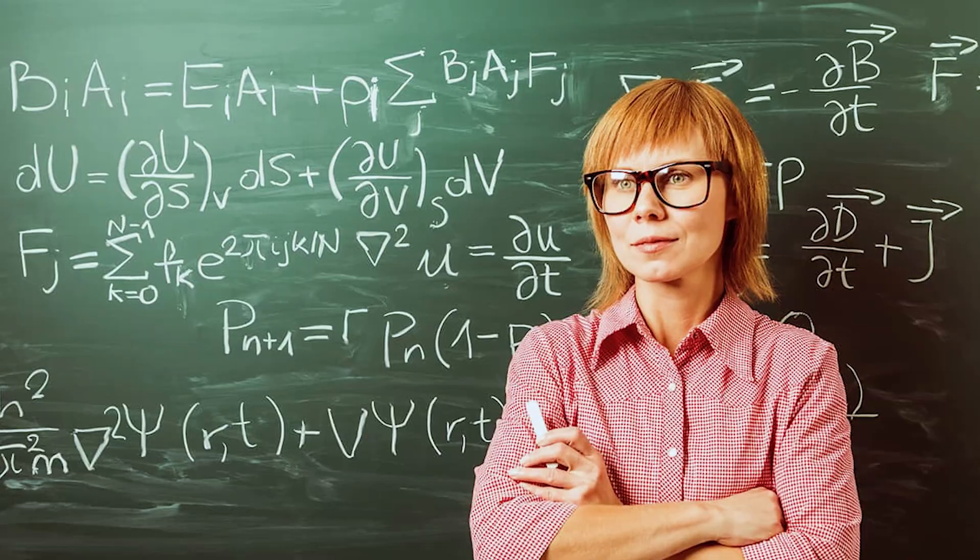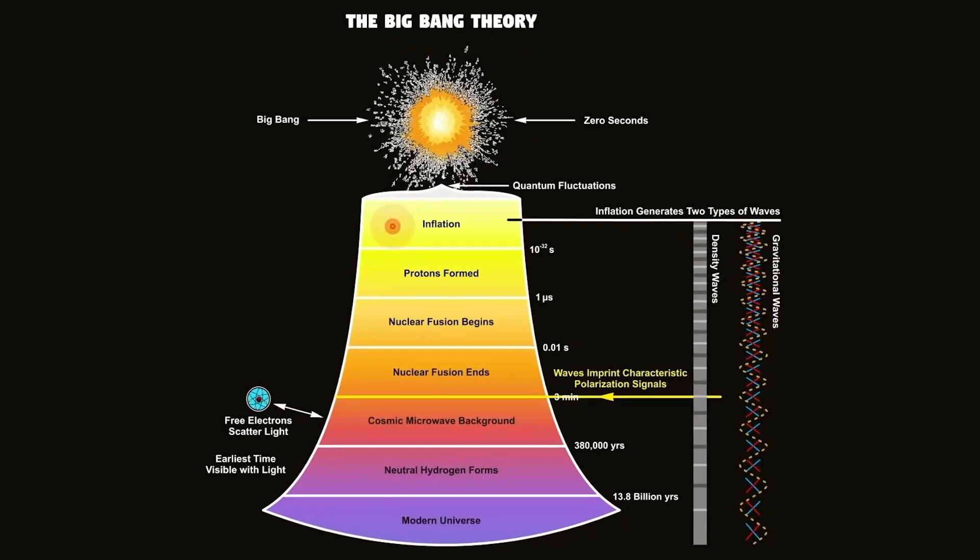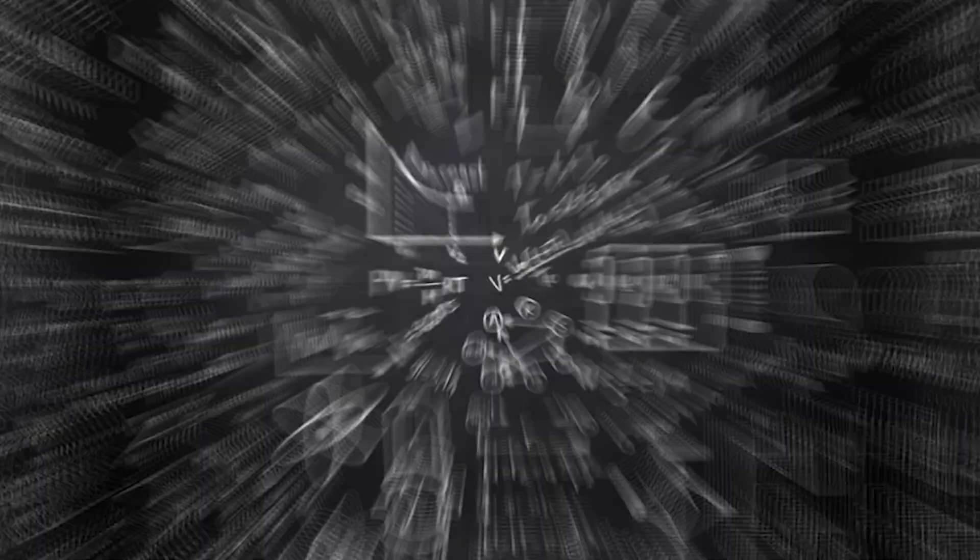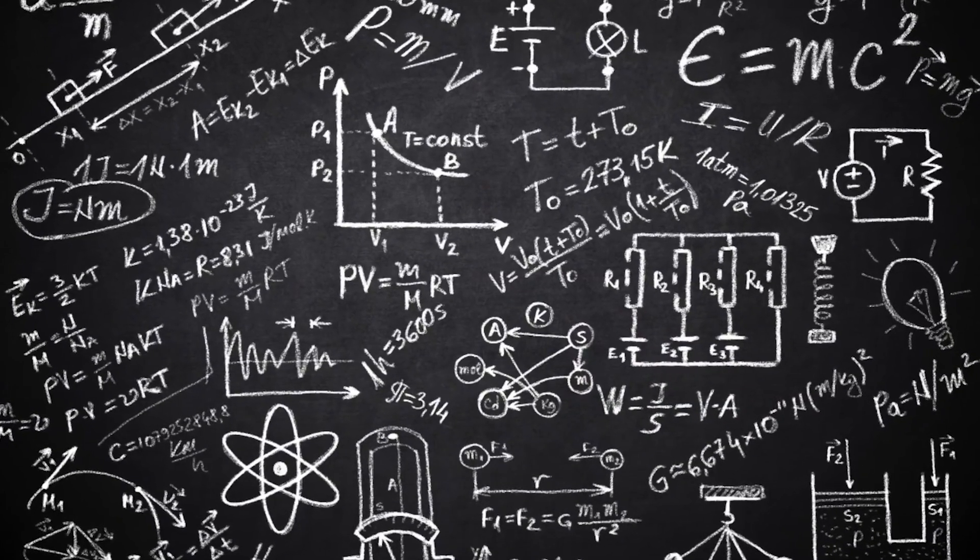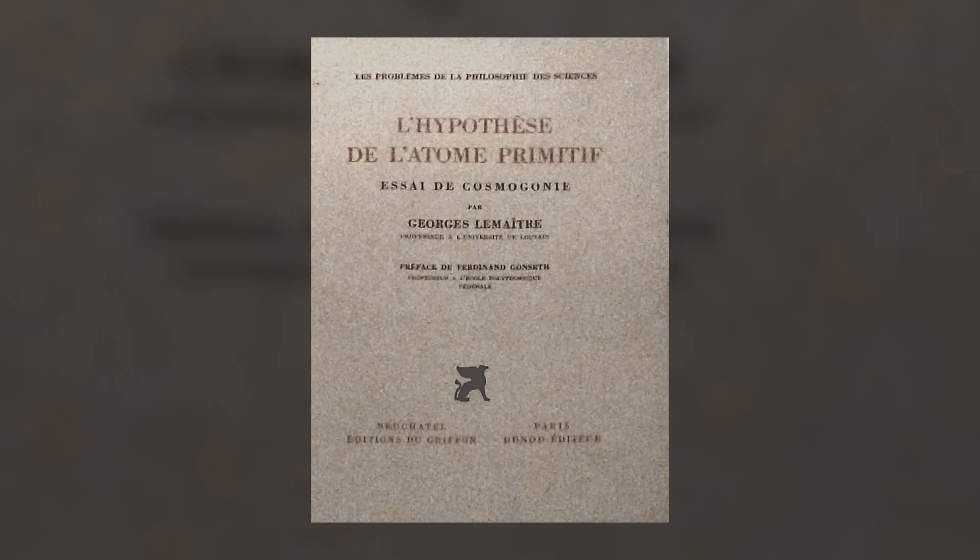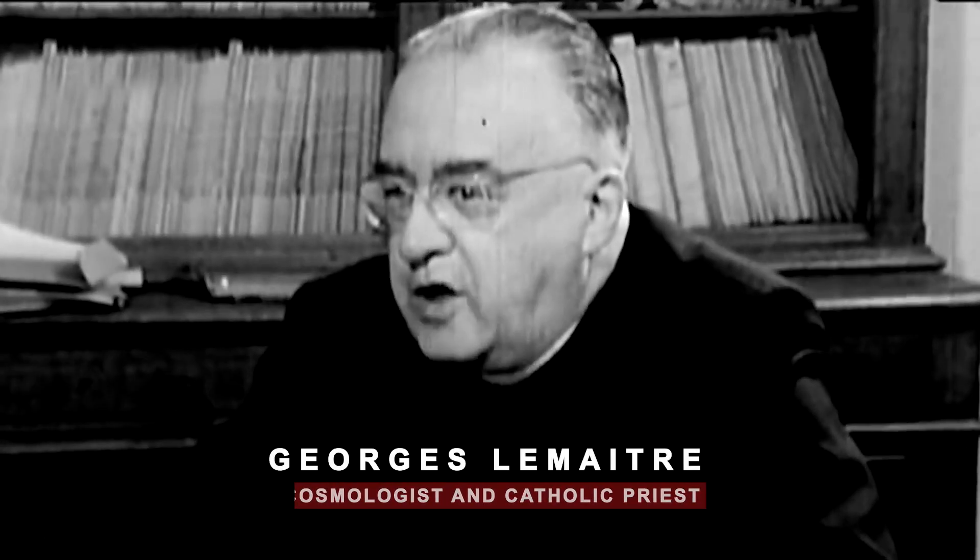You might have a gist of what the Big Bang is, but what is it exactly? Why have astronomers and physicists relied on this theory for over a century? The popular Big Bang Theory was officially formalized in a scientific paper in 1931 by a Belgian cosmologist and Catholic priest, Georges Lemaitre.